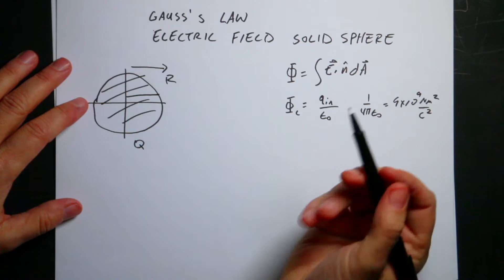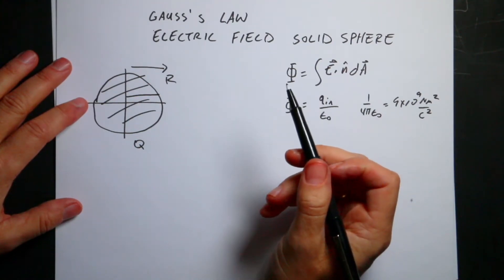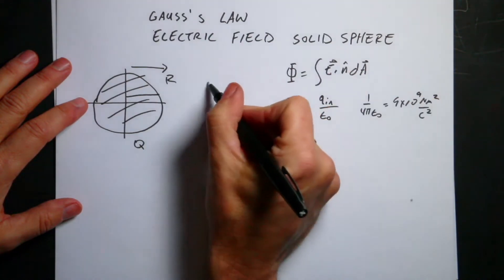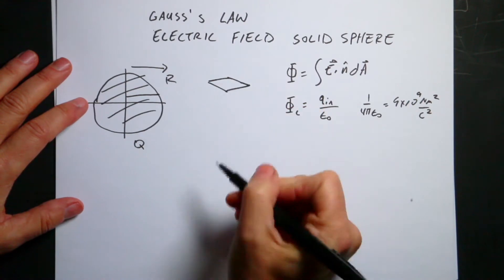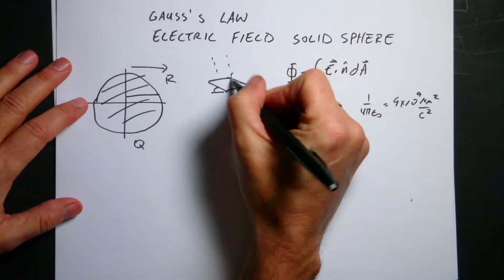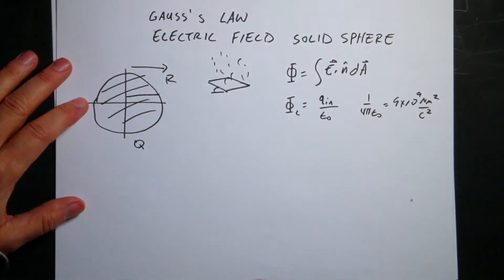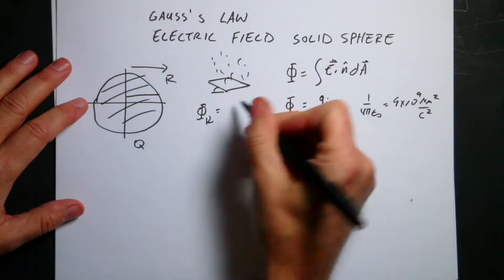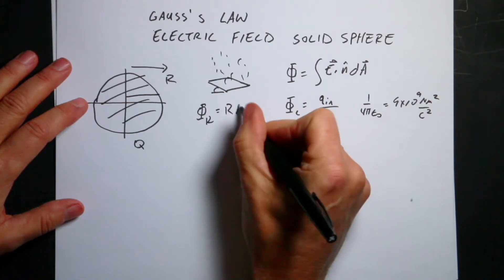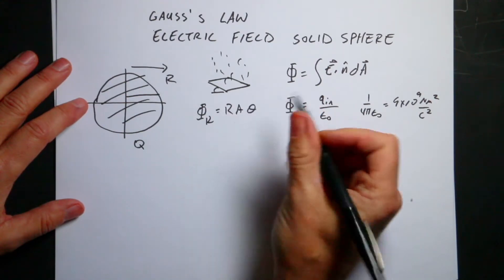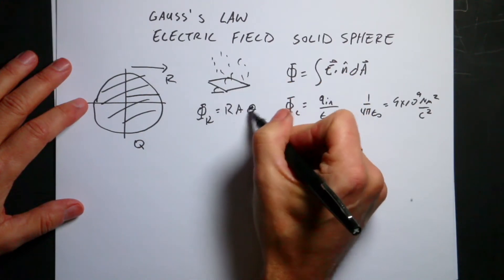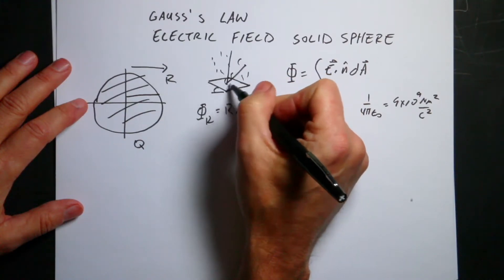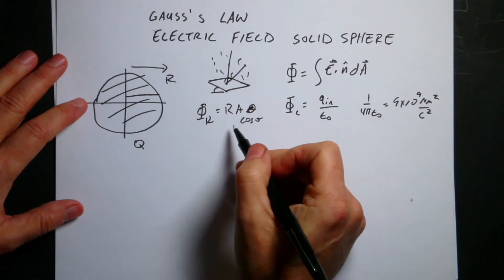So what's flux? The electric flux is the integral over an area of electric field. I like to think about rain flux. Suppose I had a sheet like this — it's tilted a little bit and it's raining. The question is how much rain hits that sheet of paper, and we could call that the rain flux. It would depend on the rain rate, the area, and cosine theta, where theta is the angle between the rain and the normal to the area.